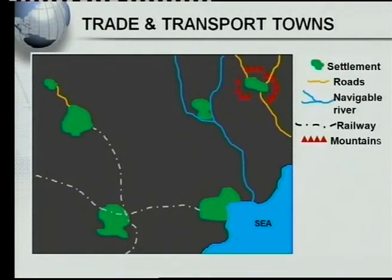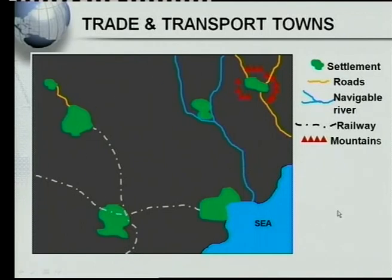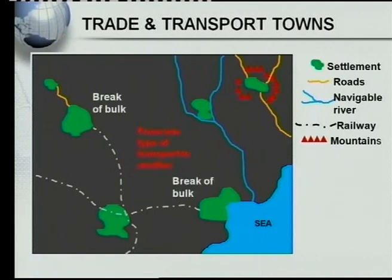The second type is trade and transport towns. In this diagram we've got a sea, railway, rivers, roads, and mountains — with settlements shown in green. There are three trade and transport towns and you must know the characteristics of each one. The first is a break of bulk town.